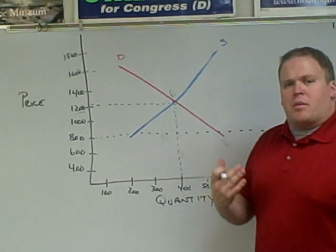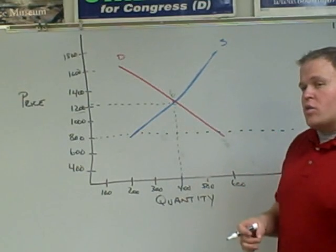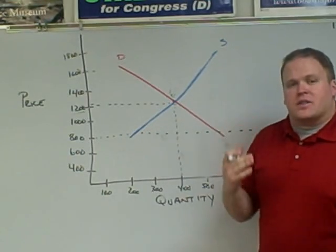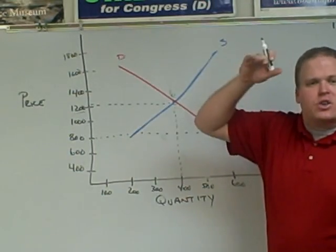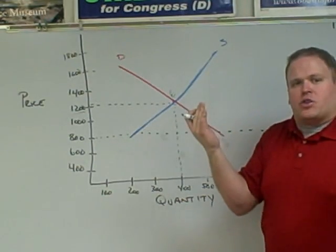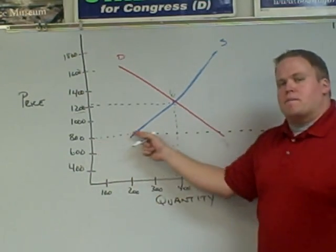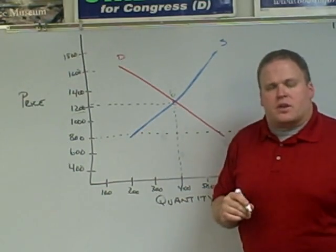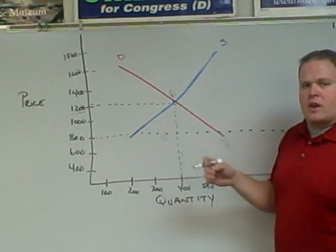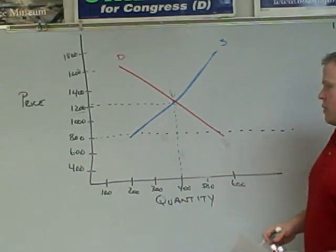The maximum price a producer can sell a television for is $800. Think about it this way: if I were to jump high, I could only jump as high as the ceiling — that's the maximum height. Eventually I'll hit the ceiling and can't jump any higher. Just like $800 is the maximum price a producer can sell a television for. If I jump too high, I've hit the maximum height, which is the ceiling. Therefore, $800 is a price ceiling.